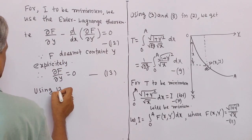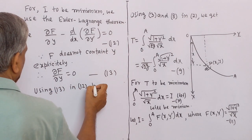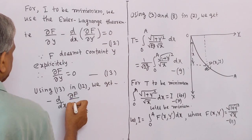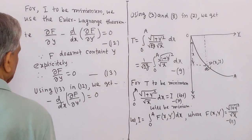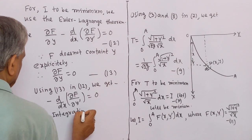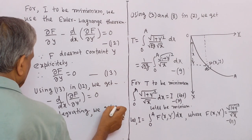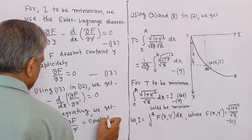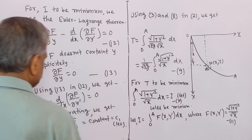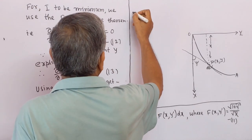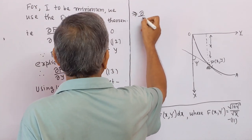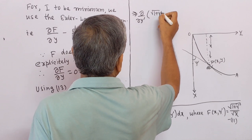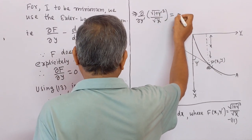Using equation 13 in equation 12, we get −d/dx(∂F/∂y') = 0. Integrating, we get ∂F/∂y' = constant = c₁. Let this be equation number 14. Now, computing the partial derivative: F = √(1 + y'²) / √x, so ∂F/∂y' equals (1/√x) times the derivative of √(1 + y'²) with respect to y', which gives c₁.